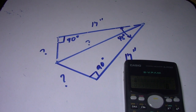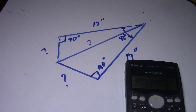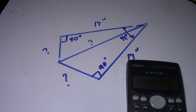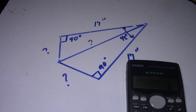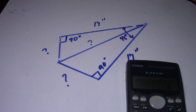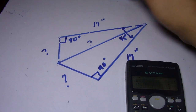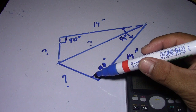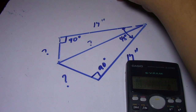Hi guys, welcome back to Piping Welding and TT channel. We have another question here regarding a triangle. We have a given of 45 degrees, 17 inches, and both sides are 90 degrees.